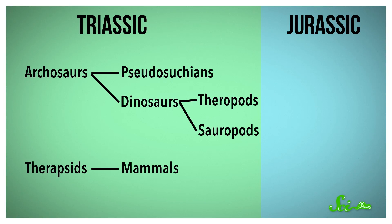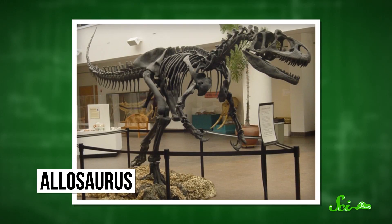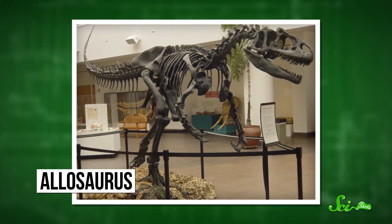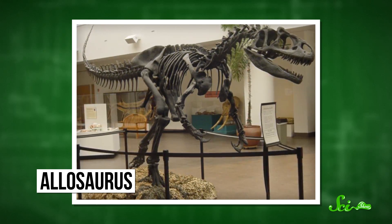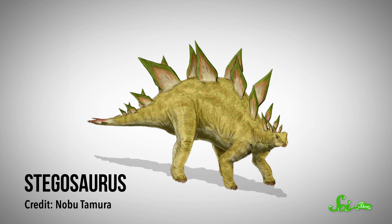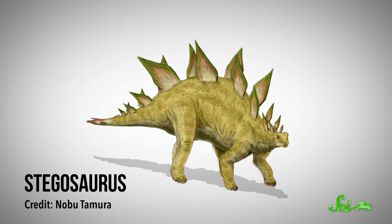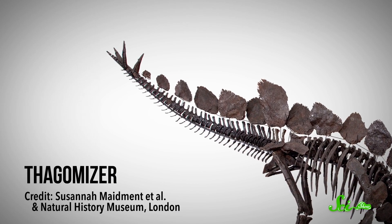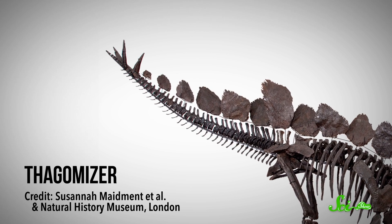Then there were the theropods — the meat-eaters that walked upright. Allosaurus was one major predator, but even bigger and meaner theropods were yet to come. The Stegosaurus also evolved during the Jurassic — a big plant-eater with plates all along its back and a spiked tail weapon called a thagomizer. Because if you're going to pick a name for a giant spiky tail weapon, you might as well make it awesome.